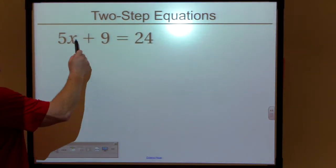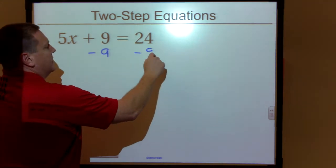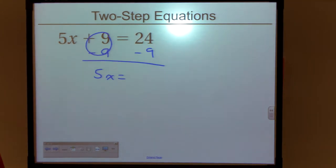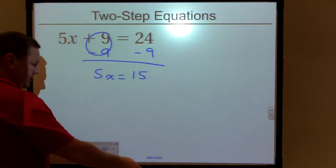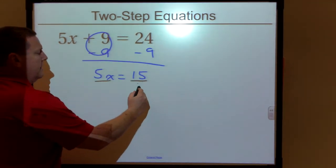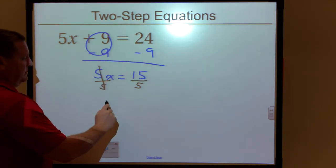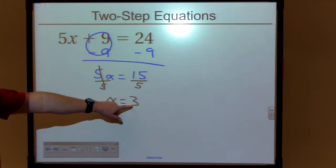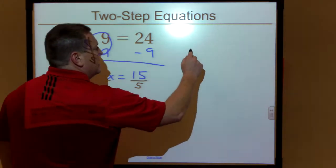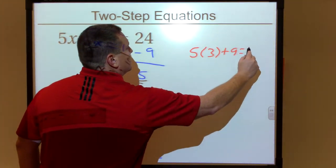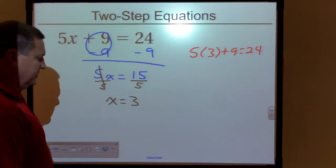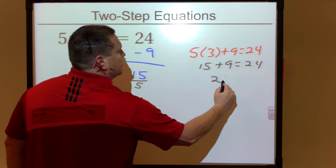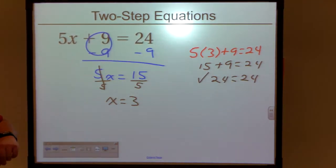Here's another example — times and an add. So I'm going to undo my adds first: minus nine from both sides. This is zero, so five X plus zero is just five X, and 24 minus nine gives us 15. Now I've got a times five, so to undo times five we're going to divide both sides by five, the coefficient out front. Five divided by five becomes one, one times X is just X, and 15 divided by five gives you three. Double check: put three back in place of X, so five times three plus nine equals 24. Five times three is 15, 15 plus nine equals 24. Twenty-four equals 24 — that checks out. X equals three is the solution.